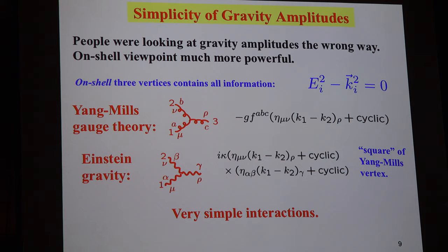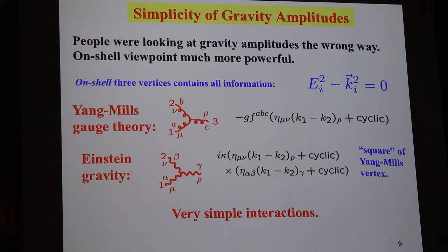Now, the reason that extremely complicated gravitational three-point interaction looked so complicated is because we were looking at it the wrong way — in terms of gauge non-invariant, unphysical quantities. The states on the external legs were not restricted to be on-shell. In general relativity, there's a big problem that eight out of ten components of the graviton are unphysical, and that garbage causes a very heavy penalty: you get a very complicated vertex.